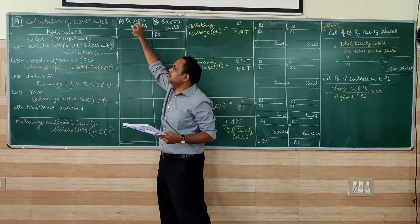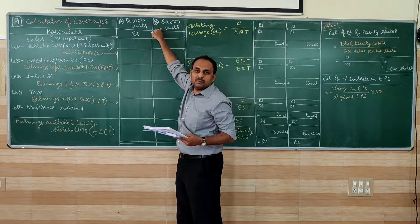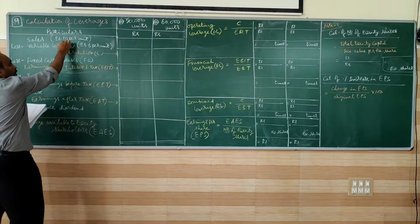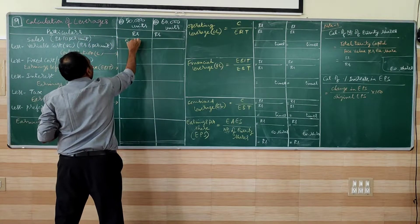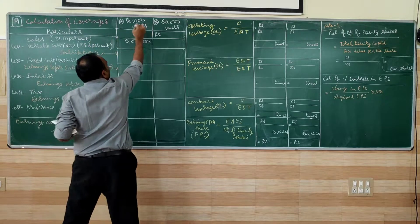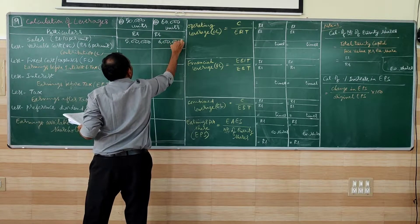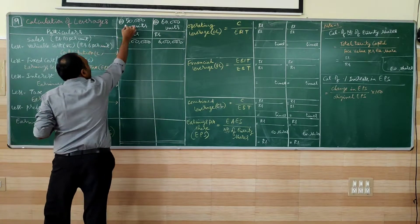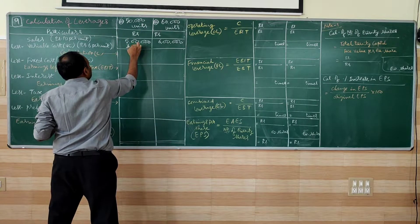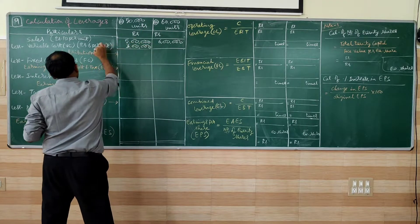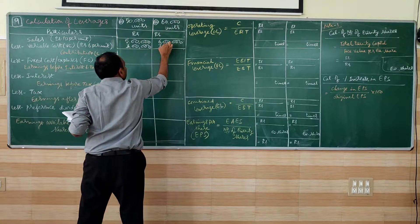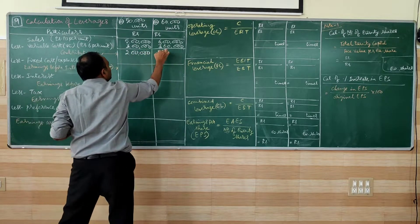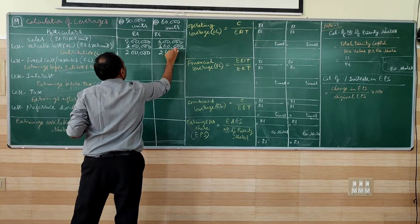So 50,000 units in the present situation, when 20% increase, it becomes 60,000 units. Now, rupees 10 per unit into 50,000 equals 5 lakhs. Rupees 10 per unit into 60,000 equals 6 lakhs. Variable cost 6 per unit, rupees 6 into 50,000 equals 3 lakhs. Rupees 6 into 60,000 equals 3 lakh 60,000. So deduct variable cost from sales.